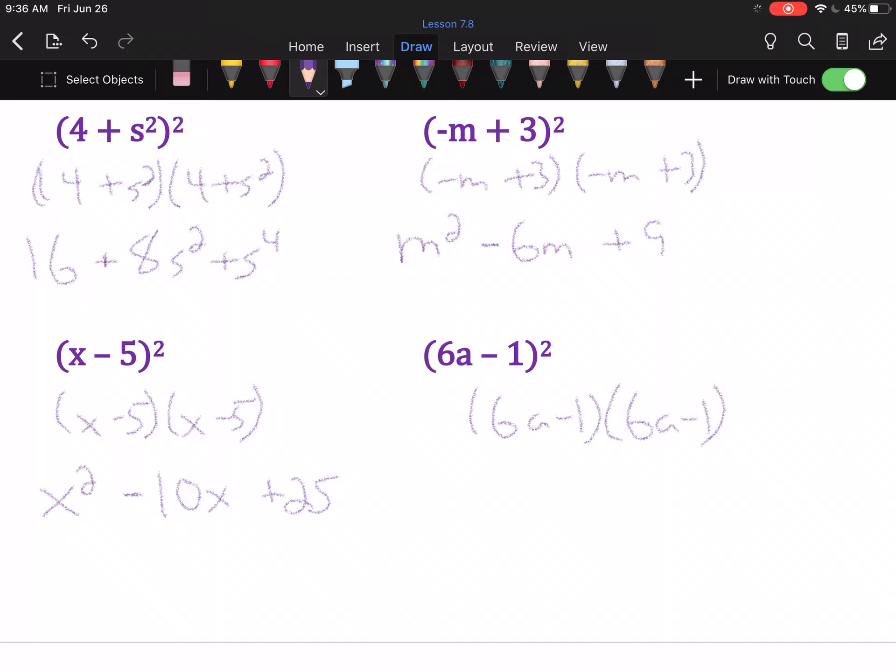6a times 6a is 36a². Outer and inner are both -6a. So, that's going to be -12a when combined. And last, -1 times -1 is positive 1.